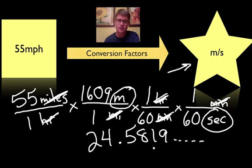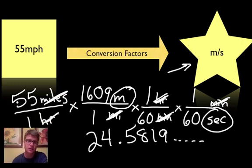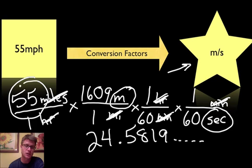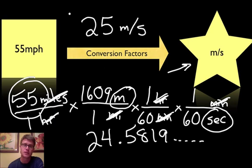And so I'm going to go all the way across the top. So using my trusty calculator I'm going to take 55 times 1,609. And then I'm going to take 60 times 60 which is 3,600. And I'm going to divide that out. And so the value I get is 24.5819 blah, blah, blah. So how many significant digits do we have? Well this had 2 significant digits. And so my answer can only have 2 significant digits as well. So my answer is going to be 25 meters per second. That has 2 significant digits as well.